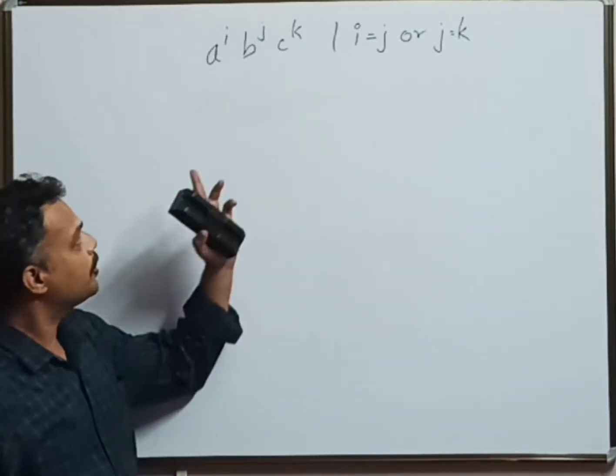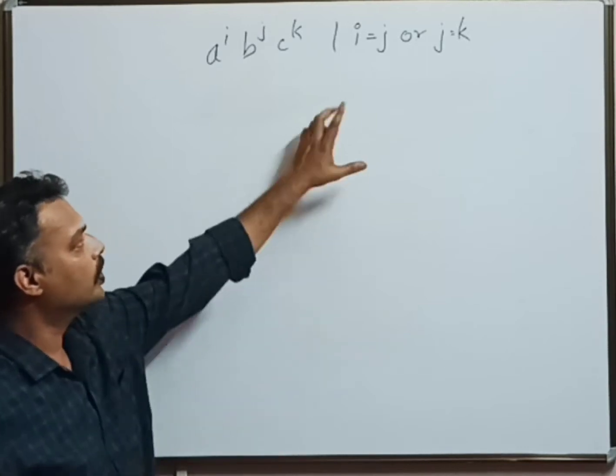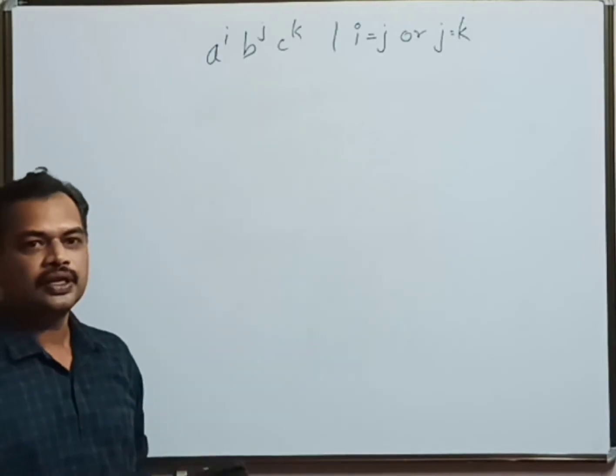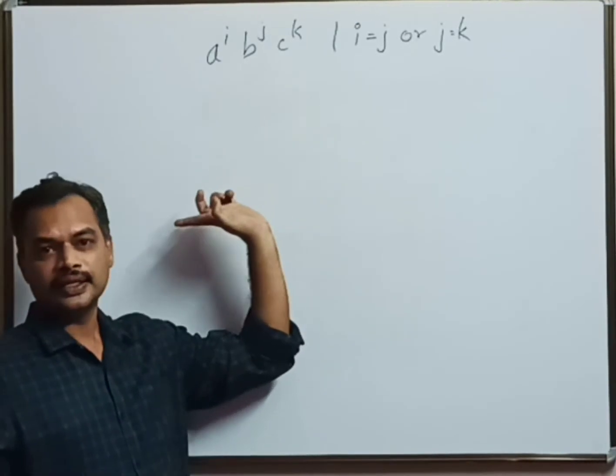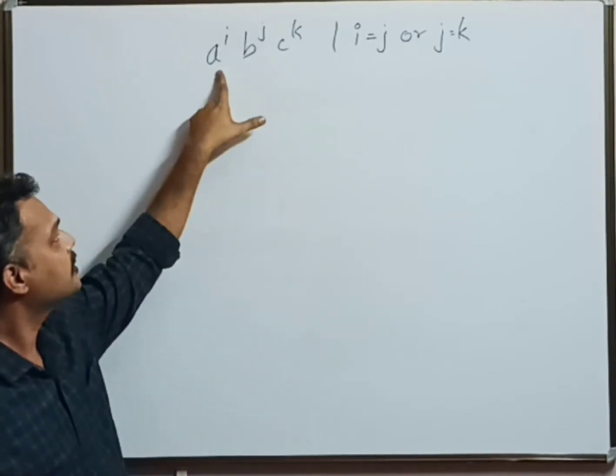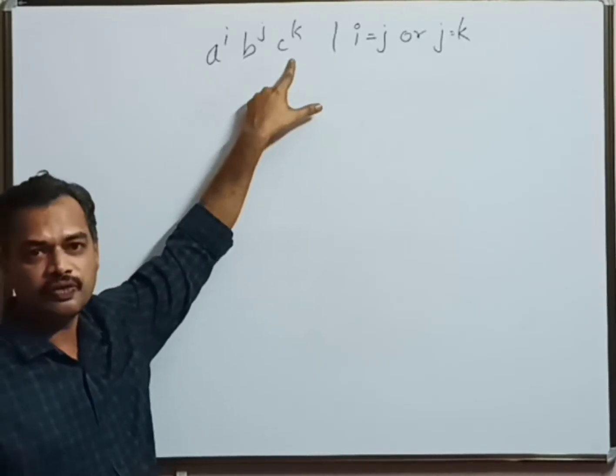Inspecting the problem, we can find two conditions: i equals j or j equals k. That means the string to be accepted by the CFG we design will either contain number of a's equal to number of b's, or number of b's equal to number of c's.